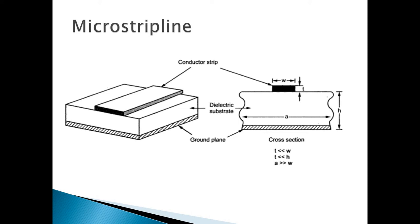Microstrip line has a simple geometry: it consists of a thin conductor and a ground plane separated by a low-loss dielectric substrate. It can be seen as an unsymmetrical strip line because the upper ground plane is not present — hence it is called an open strip line. The advantage of no upper ground plane is that the complete conductor pattern can be deposited and processed on a single dielectric substrate supported by a single ground plane, reducing fabrication cost.